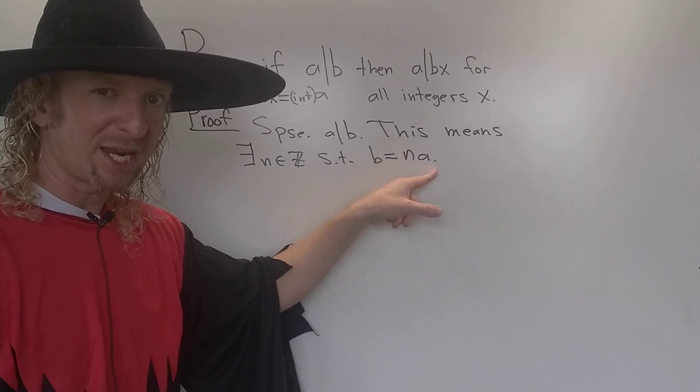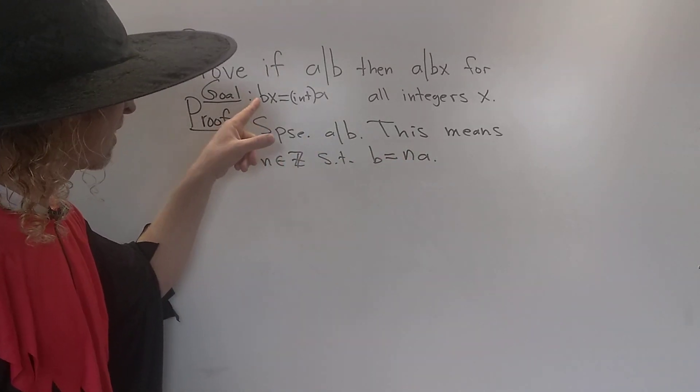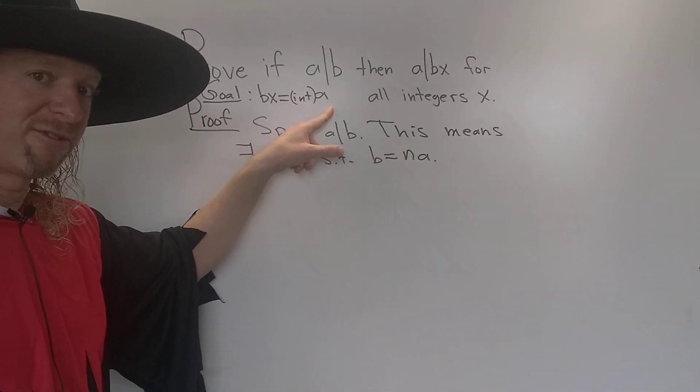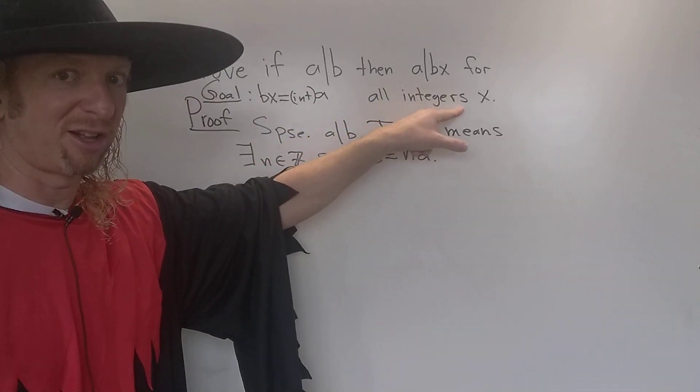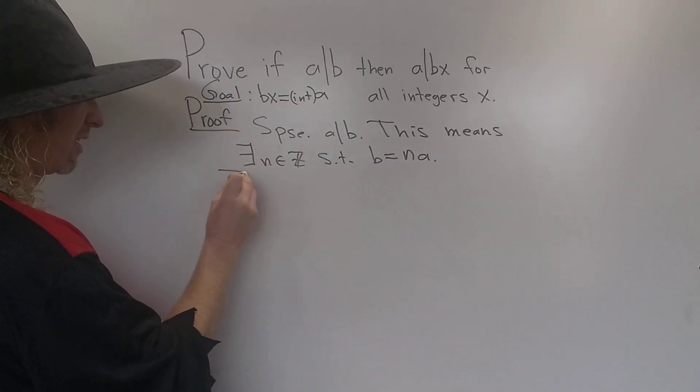So here we have b equals na. So we have to show that bx is equal to an integer times a for any x, right? It has to be true for all x. So let's do it. Let's be pro about it. Thus,